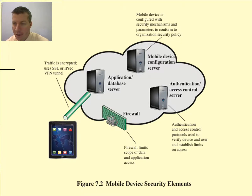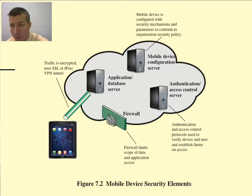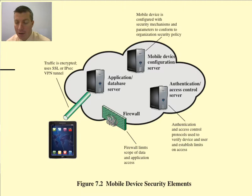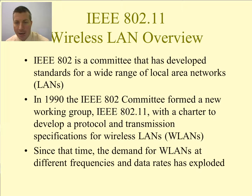Mobile device security elements include the mobile device configuration server, authentication, access control server, firewalls, and application database server — all of which need to be secured when utilizing mobile devices. Data should be encrypted using SSL or IPsec. VPN is very popular for connecting to corporate networks, and using a VPN tunnel when outside the corporate network keeps all data secured between the device and the network.